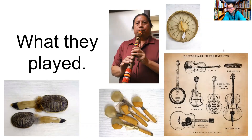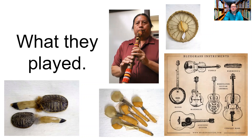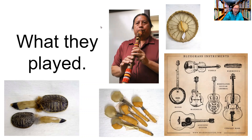Now, because this is music class, we're going to talk about the different instruments that the Cherokee played. Some of these are ancient instruments they still play, and some are newer instruments they've brought into their music. The first one is a flute. Their flutes were originally made from reeds found by the river — whatever they could use from the land. The closest thing I have to this flute is my recorder. They're played the same way and sound similar, but this is plastic — the original was made from a reed.